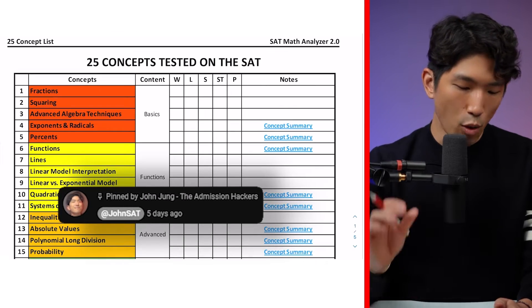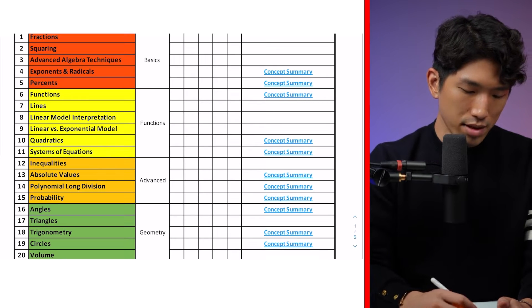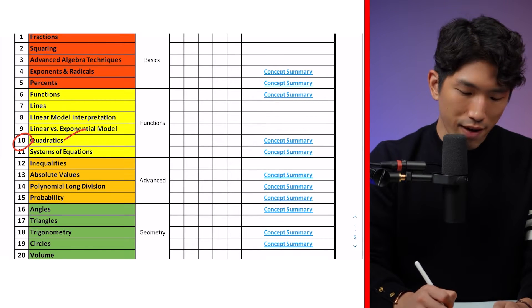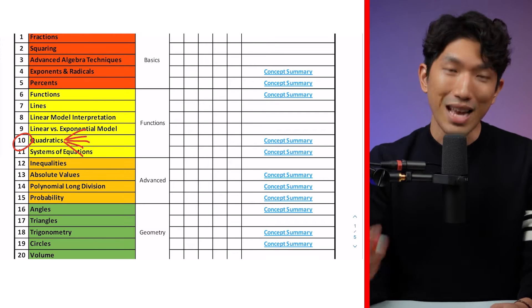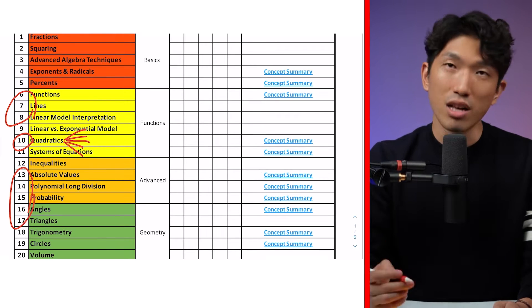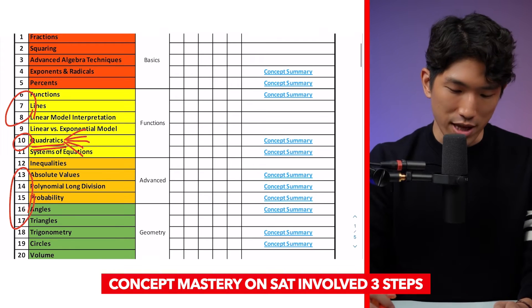I'm going to link this in the pinned comment. But what you have to understand is that for every single one of these concepts, for example, for quadratics, there are five separate things that you need to know about quadratics for the SAT. And that's going to be the case for every single one of these concepts. But let's use quadratics for demonstration purposes. How can we reach mastery on quadratics?